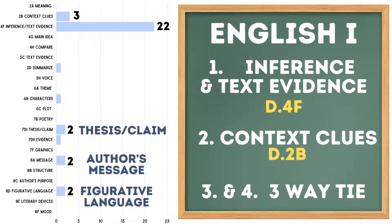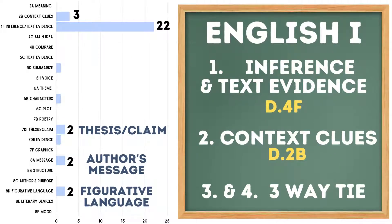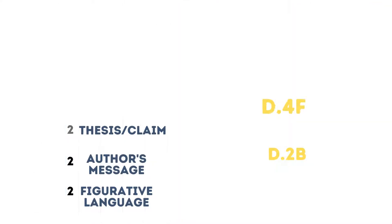Now looking at English 1, the top TEKS were Inference and Text Evidence, Context Clues, and there was a three-way tie for 3rd and 4th between Thesis and Claim, Author's Message, and Figurative Language.